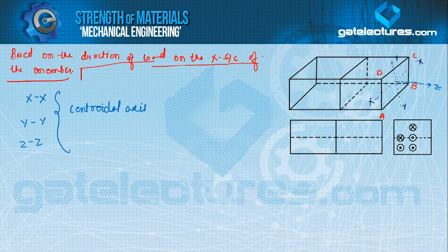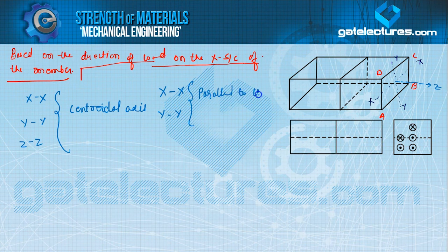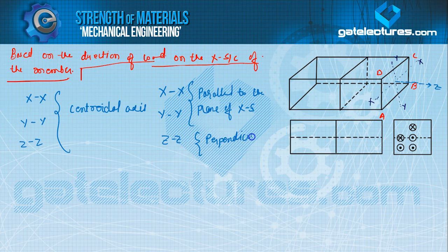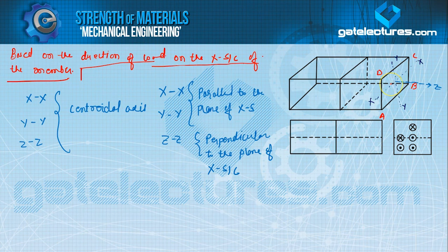The XX axis is the horizontal centroidal axis and the YY axis is the vertical centroidal axis. The ZZ axis is perpendicular to the plane of the cross section. There is also a fourth axis called the longitudinal axis — it is an imaginary axis which passes through the centers of all cross sections of the member.